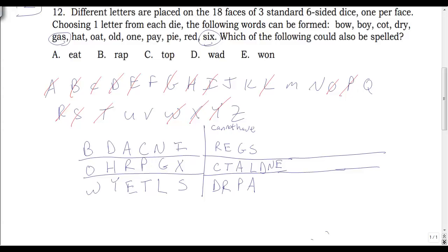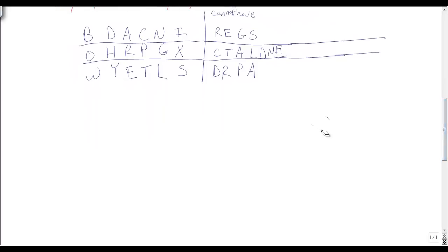Now checking the answer choices. EAT: E and T are on the same die, so can't form EAT. WRAP: R and P on the same die. TOP: O and P on the same die. WAD: A and D on the same die. NOW: N, O, W — each on a different die, so NOW works. My answer is E, NOW.